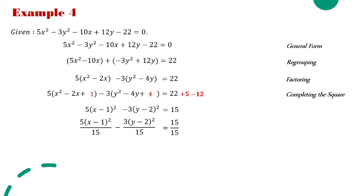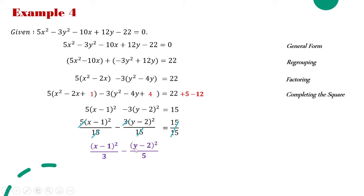Since our target is to have the right side equal to 1, we divide all terms by 15. Simplifying: 5/15 = 1/3 and 3/15 = 1/5, and 15/15 = 1. This is now the standard form of the equation of the given hyperbola.